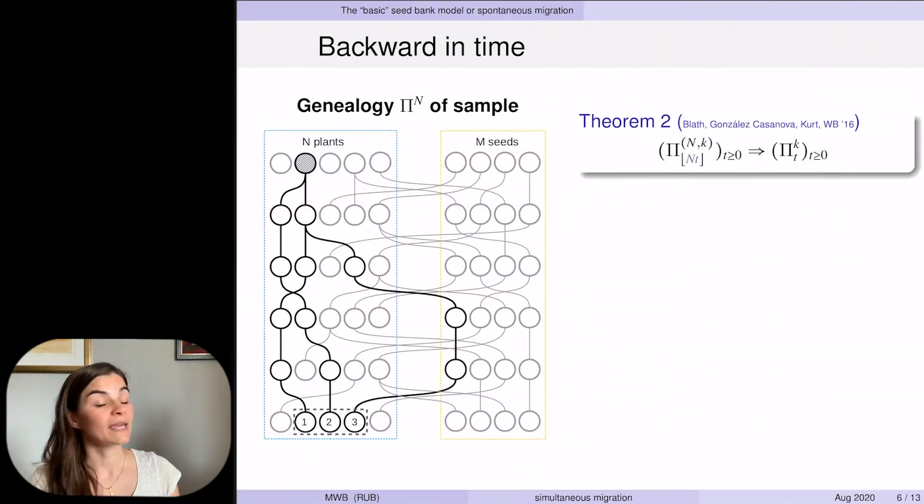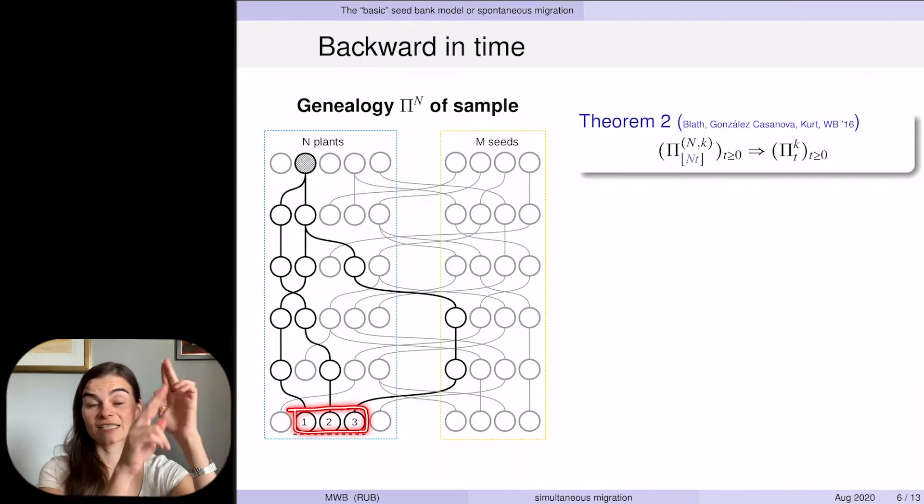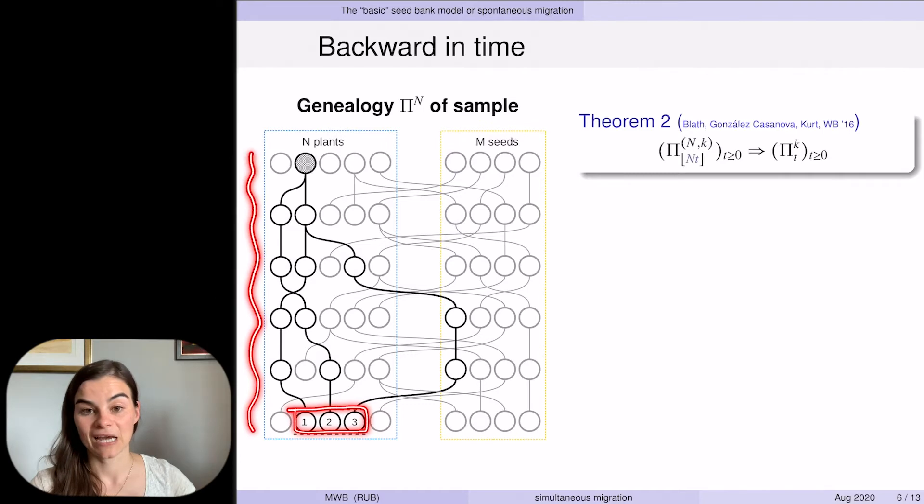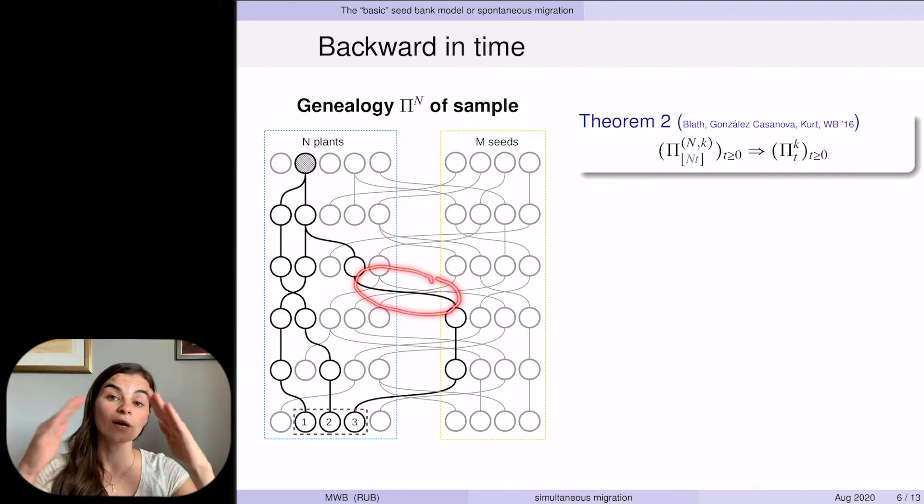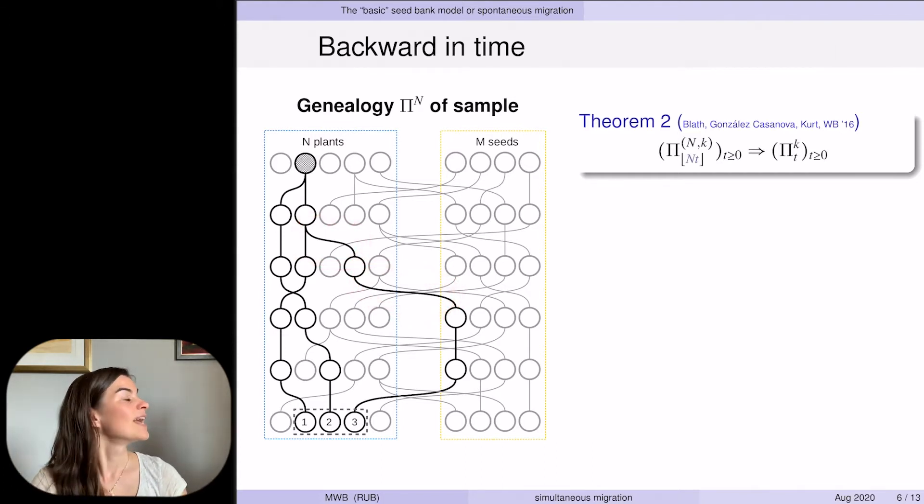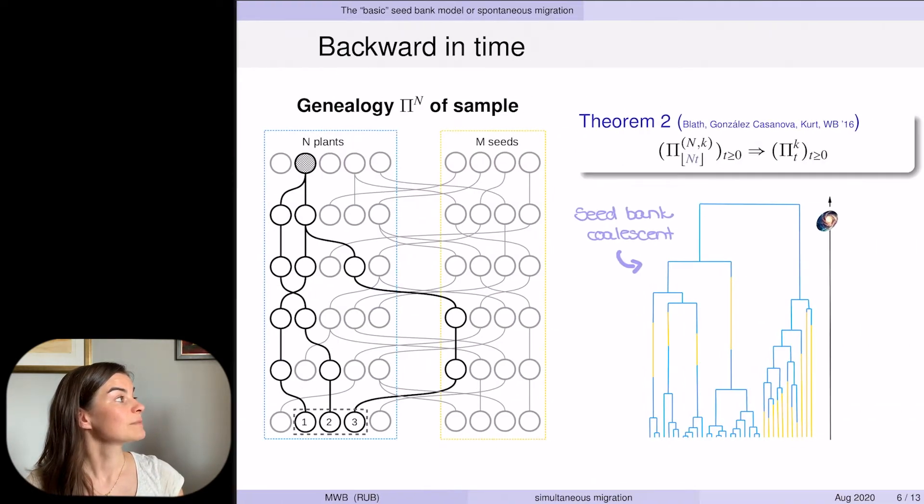We can play the same game backwards in time, where on the random graph we take a sample at generation zero and trace its ancestry or genealogy back in time until you meet the most recent common ancestor. Note that this tree has three types of transitions: active to dormant, dormant to active, or two active lineages may coalesce. This also has a scaling limit at the same scale as the Wright-Fisher diffusion, and this limit is called the seed bank coalescent.